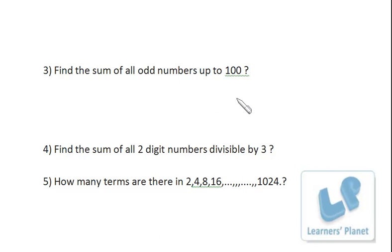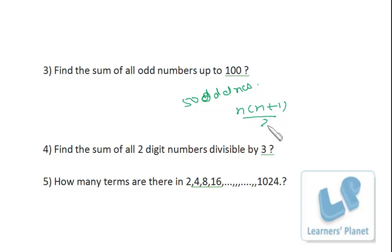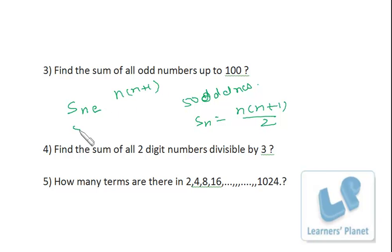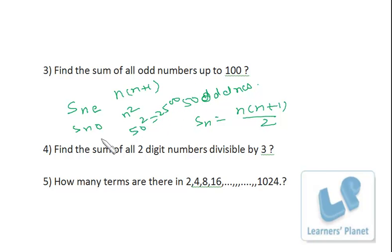From 1 to 100 there are 50 odd numbers and 50 even numbers. The sum of first n natural numbers is n(n+1)/2. The sum of first n even natural numbers is n(n+1). The sum of first n odd numbers is n². Since we need the sum of all odd numbers up to 100 and there are 50 odd numbers, the sum is 50² = 2500.